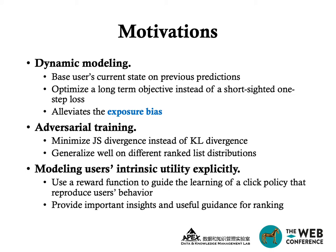The second motivation is adversarial training. With adversarial training, we minimize JS divergence instead of KL divergence, which helps the model generalize well on different ranked list distributions. The third point is that we can model users' intrinsic utility explicitly. We use the reward function to guide the learning of a click policy that reproduces users' behaviors, and the reward function recovers users' intrinsic utility, providing important insights for learning the ranking function.